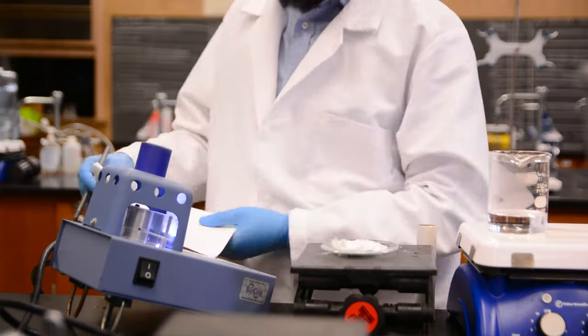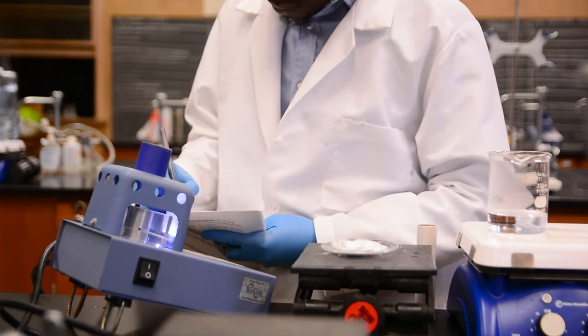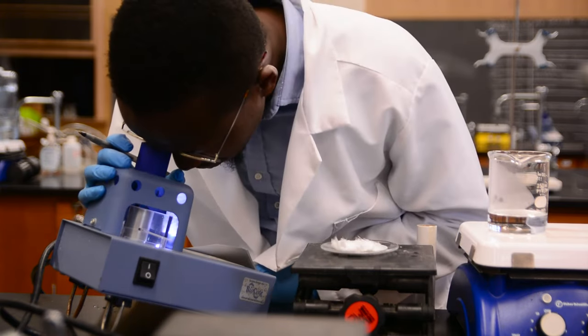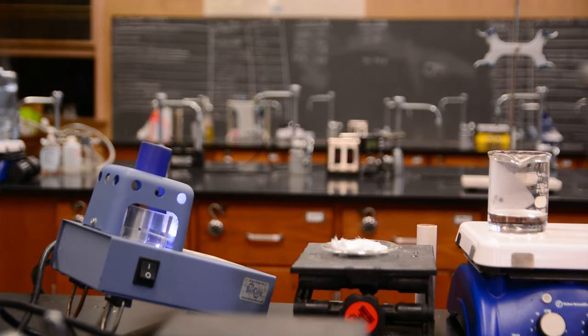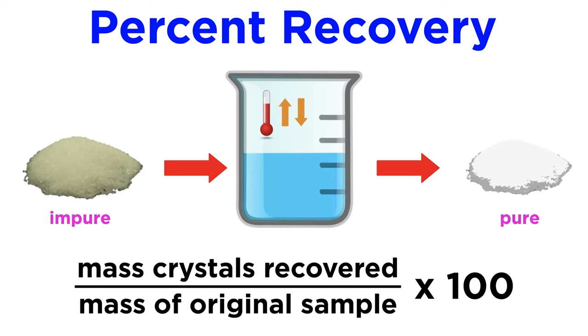So the width of the range, together with a comparison to the tabulated melting point, will allow us to gauge the purity of the recrystallized product. Be sure to turn off the melting point apparatus when you are finished with it.